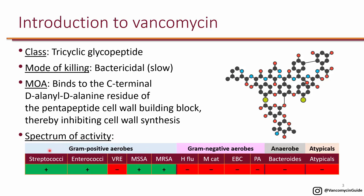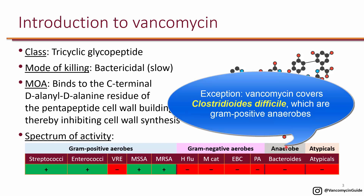Gram-positive organisms such as streptococci, enterococci — with the exception of vancomycin-resistant enterococcus — methicillin-susceptible Staphylococcus aureus, as well as MRSA. Vancomycin does not have activity against any gram-negative organisms, anaerobic organisms such as Bacteroides, or any of the atypical bacteria.